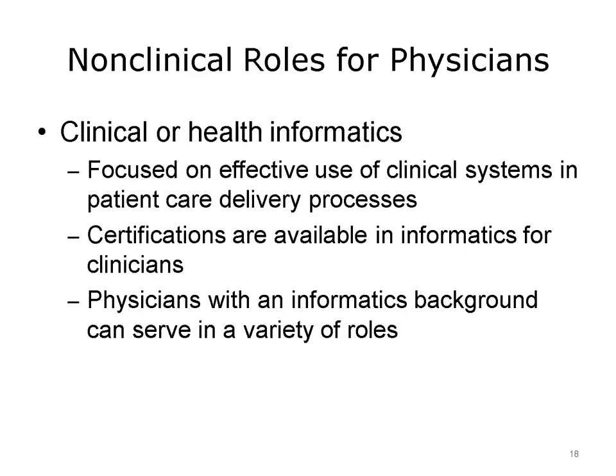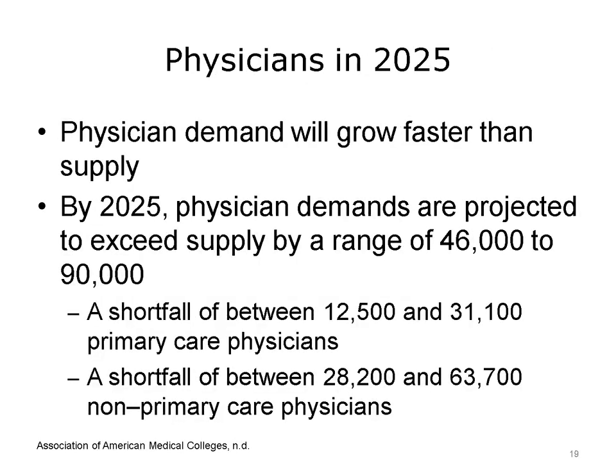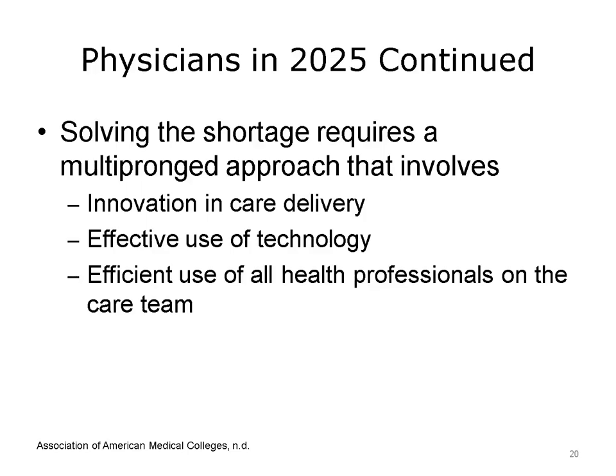In March 2015, IHS Inc., an economic modeling and forecasting firm, released a study, The Complexities of Physician Supply and Demand: Projections from 2013 to 2025, prepared for the Association of American Medical Colleges. The findings showed that by 2025, the physician shortage is projected to range from 46,000 to 90,000 doctors. The study examined scenarios including increased use of advanced practice nurses, greater use of alternative settings such as retail clinics, and delayed physician retirement, and determined that the physician shortage will nonetheless persist. Addressing the shortage will require a multi-pronged approach including innovation in delivery, greater use of technology, and improved efficient use of all health professionals on the care team.